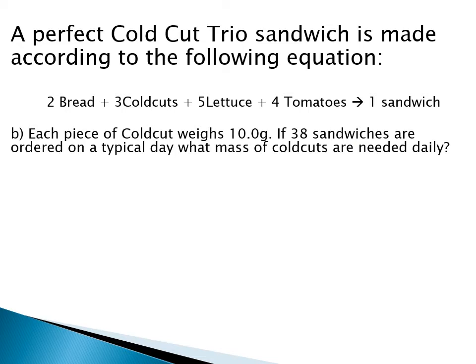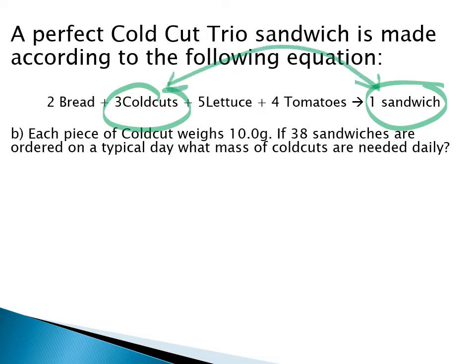Let's try part B of the cold cut trio sandwich example using mass, to see how we can add that to our conversions. Often we are going to be measuring things not in amounts but in masses, because you can't actually measure out individual particles — there are too many of them. So in this example, knowing that each piece of cold cut weighs 10 grams, we want to find out how much mass of cold cuts a shop goes through in a day.